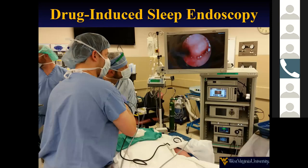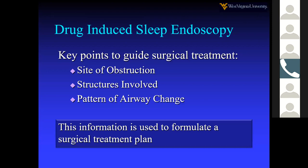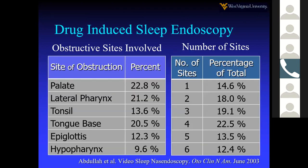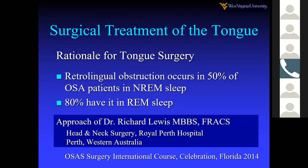Sleep endoscopy will guide you as far as the sites of obstruction, structures involved, and the pattern of collapse, allowing you to form a surgical plan. Abdullah's paper generally shows there are more than one or two sites of obstruction in most people, and many contributing structures are involved.